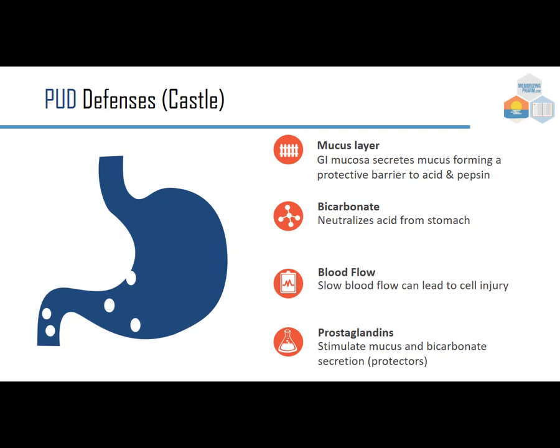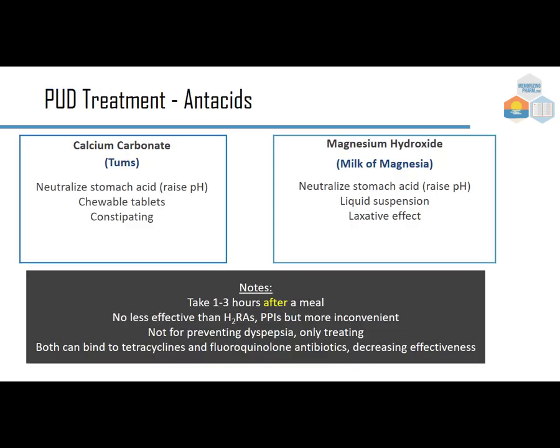Treatment depends on severity. We can start with antacids to neutralize acid. Calcium carbonate (brand Tums) neutralizes stomach acid to raise pH — it's a chewable tablet but can be constipating. Magnesium hydroxide, or milk of magnesia, also neutralizes stomach acid and raises pH but has a laxative effect. Antacids are taken one to three hours after a meal and are no less effective than H2 receptor antagonists or proton pump inhibitors, but are more inconvenient to dose frequently.